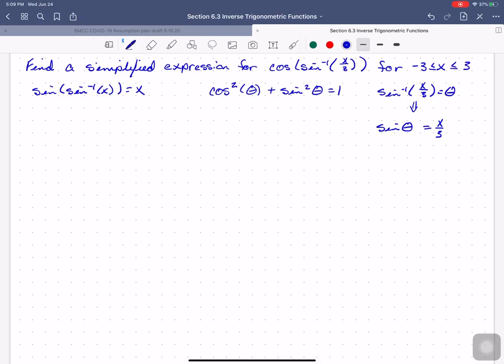Okay. So, this means that cosine squared theta, which is the angle whose sine is x over 3, plus x over 3 squared equals 1. That means that cosine squared theta equals 1 minus x squared over 9, which means that cosine squared theta, let's put all that over 1, so I've got 9 minus x squared all over 9.